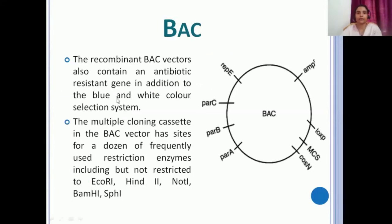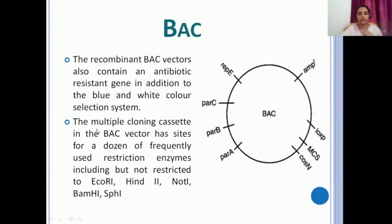Recombinant BAC vectors also contain an antibiotic resistance gene — in this case AMPR, meaning the BAC vector is resistant to ampicillin, so it will easily grow in media containing ampicillin. In addition to that, there is a blue-white color selection system. The multiple cloning cassette in the BAC vector has sites for many frequently used restriction enzymes, including NotI, EcoRI, HindIII, BamHI, and SphI.